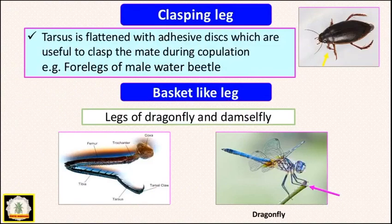Next is the clasping leg. In this type, the tarsus is flattened with an adhesive disc, which helps the insect clasp the mate during copulation. For example, in water beetles, the forelegs are used for clasping purpose.